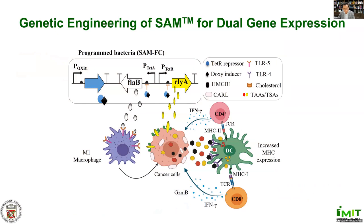My group has explored ways to enhance adaptive immunity against cancer using the SAM strategy. After many trials, we found that the combined expression of Cytolysin A — we call it CLIA — which is the pore-forming protein expressed in Salmonella typhi, and FLA-B could maximize the anti-cancer immune response. CLIA plays a major role in overproduction of tumor-specific antigens, as well as damage-associated molecular patterns from cancer cells that can strongly enhance anti-cancer immunity, particularly through T cells. FLA-B complements CLIA by strengthening innate immunity, mostly focused on macrophages.